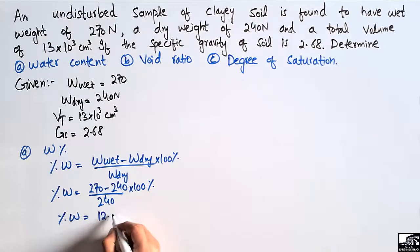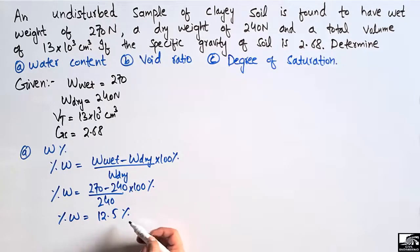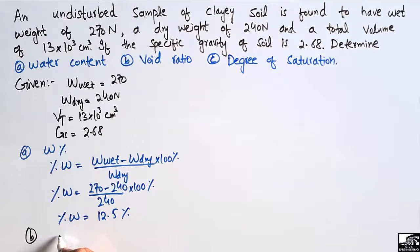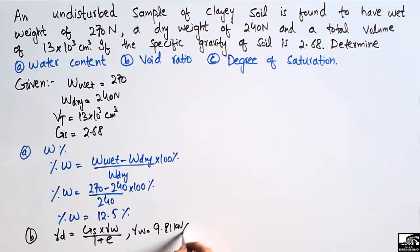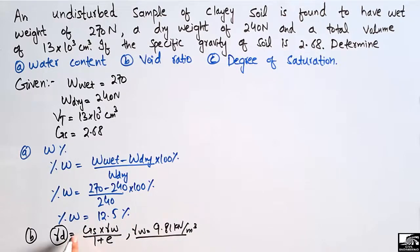We get the water content for this soil sample as 12.5%. Now to find out the void ratio, we can use the formula: γ_d = (G_s × γ_w) / (1 + e). We know the specific gravity G_s and the unit weight of water γ_w = 9.81 kN/m³, but we first need to find γ_d, the dry unit weight of the soil sample.